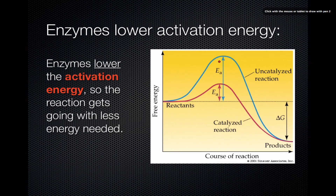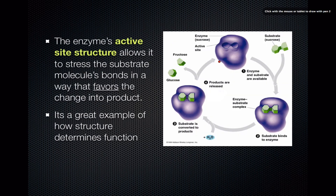Enzymes work by lowering the activation energy. With the enzyme, the E sub A is much lower — less than half of the uncatalyzed reaction — and because there's less energy required to get it up to that starting point before it can fall downhill, the reaction is much more likely to take place. This is how enzymes are actually able to speed up chemical reactions.